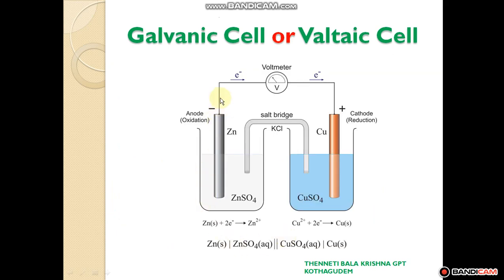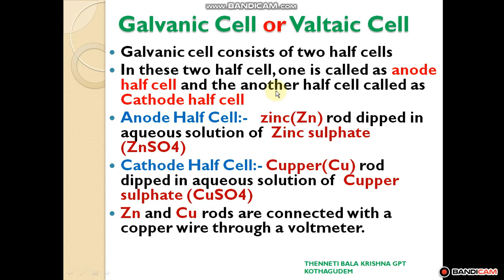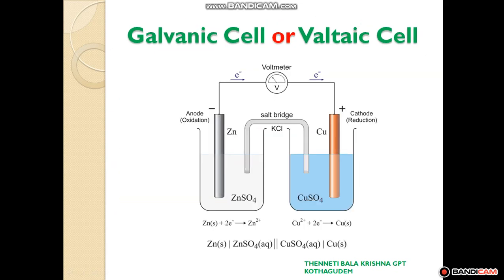Observe this diagram. The zinc metal rod and the copper metal rod are both connected by a copper wire through the voltmeter.